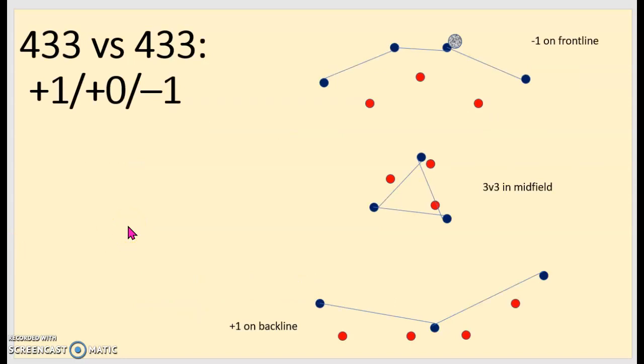We'll start off with just 4-3-3 versus itself. Here's that plus one, plus zero, minus one situation. So I'm saying we're the team in red, and we just lost the ball, so blue has it. And notice here, on the back line, I have a free player. So if they play direct, if they play a long ball, I'm always going to have one extra guy here. It's a bit of safety in the back. We're covered in the midfield, 3v3. There's no one going to be free. And then when we press up here, we have one less guy here, and this is where I'd prefer to be manned down rather than closer to my own goal. So I like 4-3-3 versus 4-3-3.